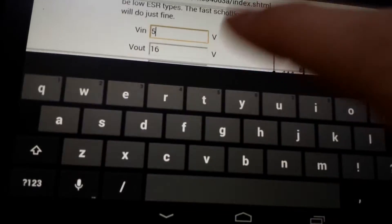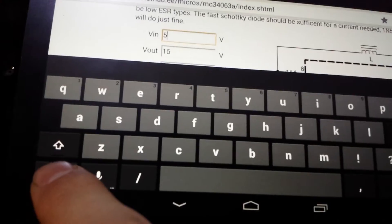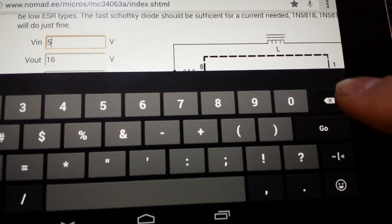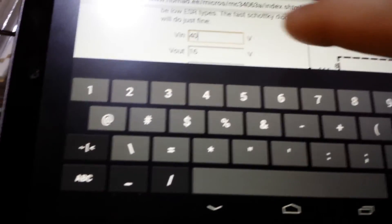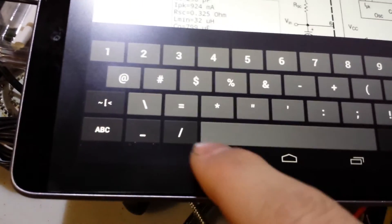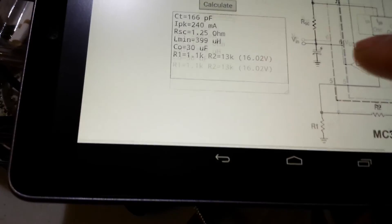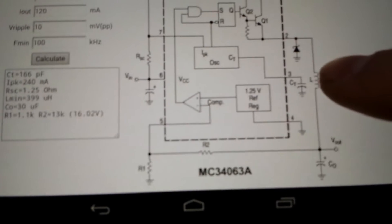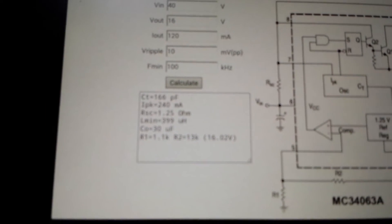And of course, if for example you wanted to do a step down, let's just input some numbers here. So my input will be 40, which is the maximum, and then calculate. And it actually switches from the step up to the step down converter, and it tells you all the new values you need to do for it.